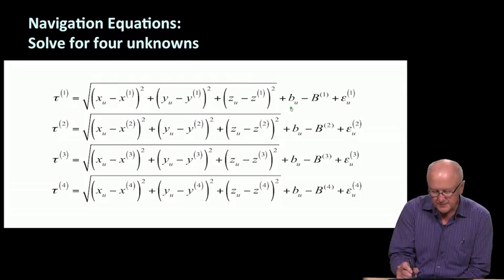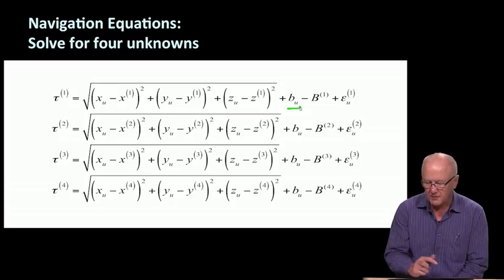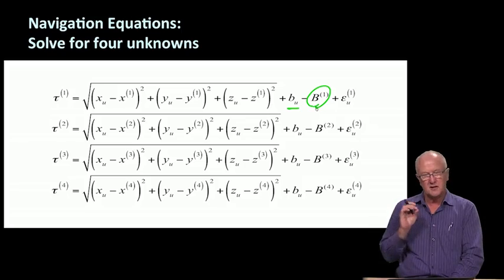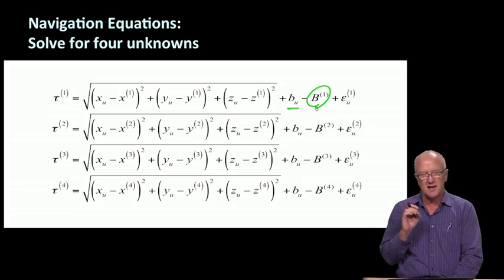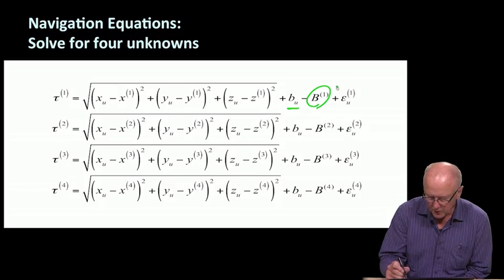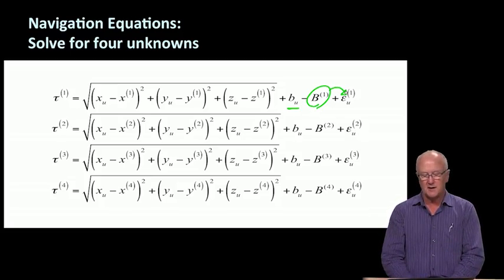In addition, we have the fourth state estimanda. b^1 is the error, any residual error in the transmission time of satellite 1 relative to the GPS master clock. For most of this discussion, we'll subsume that in this general error term, epsilon.